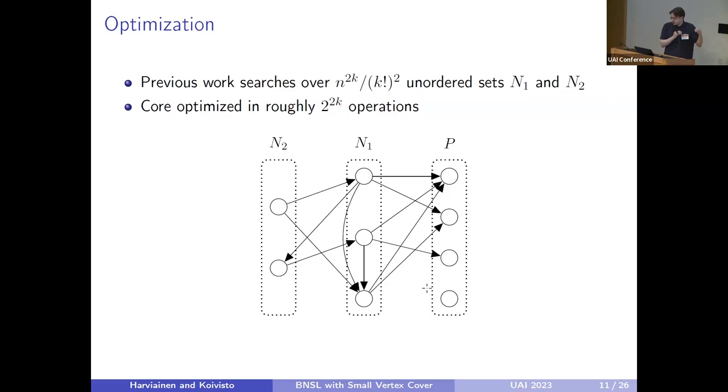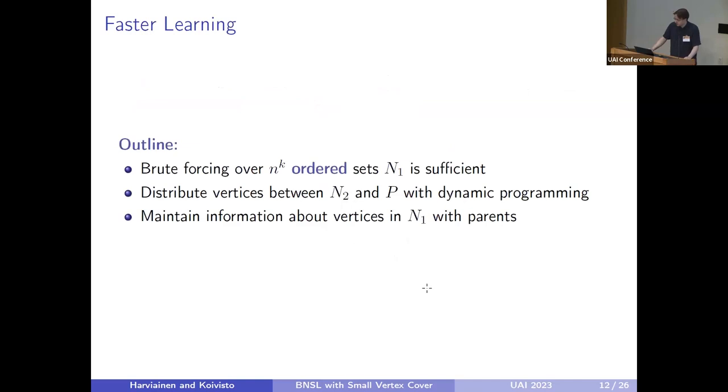In the previous work, they iterate over all possible sets N1 and N2, so all possible cores, and then optimize it using the classical dynamic programming algorithm. Because the size of the core is bounded, this takes only a polynomial time in N for a fixed K. For the periphery, they find the best parent sets for each of those vertices. Again, because they are from the core, whose size is limited, this is polynomial in N for a fixed K.